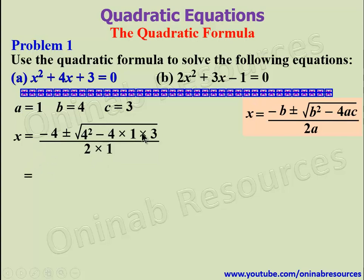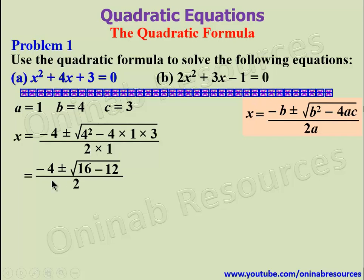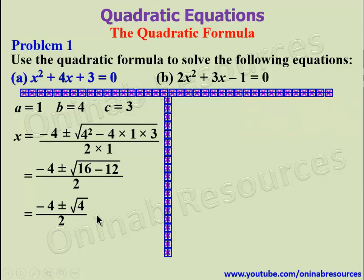Simplifying inside the square root: 4 squared is 16, minus 4 times 1 times 3 gives 12. So we have negative 4 plus or minus the square root of 16 minus 12, which is 4, all over 2. The square root of 4 is 2, so we have x equals negative 4 plus or minus 2 over 2.